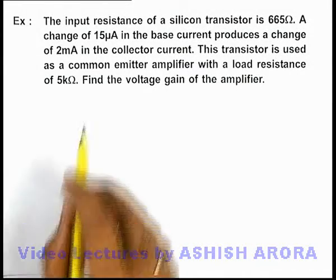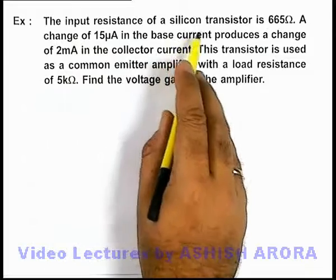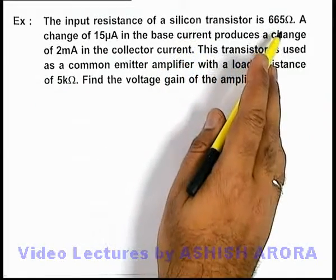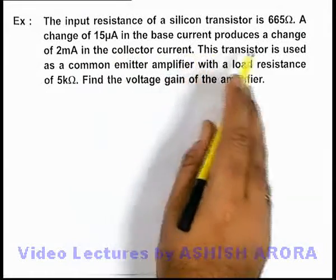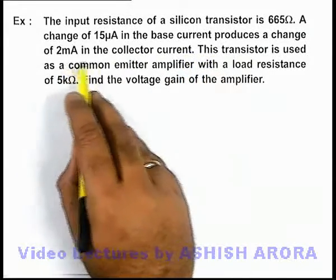In this example, we are given that the input resistance of a silicon transistor is 665 ohms, and a change of 15 microampere in the base current produces a change of 2 milliampere in the collector current.